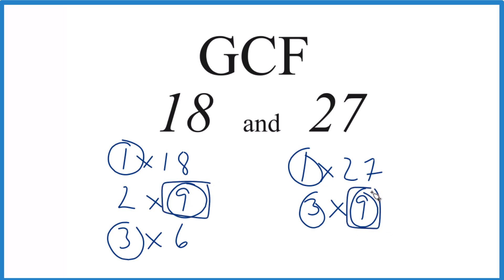So 9, that's our greatest common factor. It goes into 18 and it goes into 27. So in answer to our question, the GCF for 18 and 27 is 9.